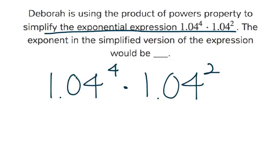It says the exponent in the simplified version of the expression would be blank. So we need to fill in the blank. They don't want the whole simplified expression multiplied or anything. They actually just want to know what the exponent would be in the simplified version.